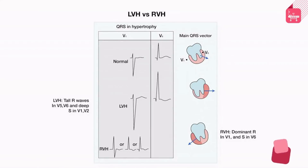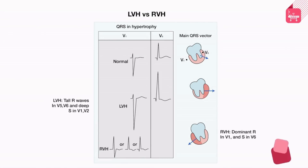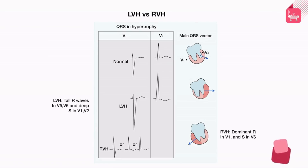In the normal situation, the LV is the more bulky ventricle, giving a net QRS vector going downward and to the left, resulting in dominance of an S wave in lead V1 and R wave dominance in lead V6. With LVH, these changes are further exaggerated, producing deep S waves in V1 and V2 and tall R waves in V5 and V6. With RVH, as the RV mass increases and starts predominating, you get tall R waves in V1 and significant S waves in the lateral leads at V6.